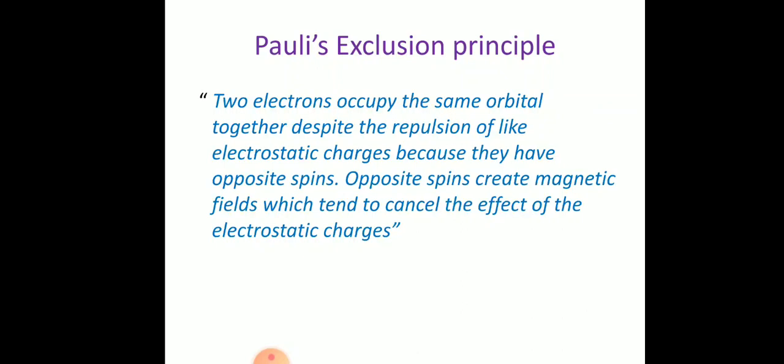Another statement of Pauli's Exclusion Principle: two electrons occupy the same orbital together despite the repulsion of like electrostatic charges because they have opposite spins. Opposite spins create a magnetic field which tends to cancel the effect of the electrostatic charge, so we can have two electrons in the same orbital — one with positive spin and one with negative spin.